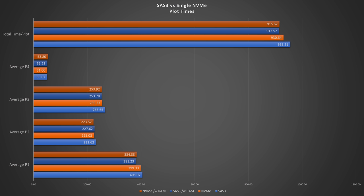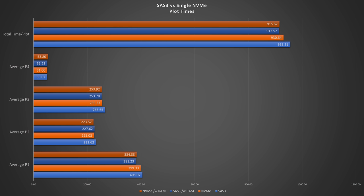The U8 V7 with a RAM disk at 915 seconds. Looking at these results, we actually notice that the SAS 3 is just a little bit faster than an NVMe when using RAM as T2. It is however 25 seconds slower when not using RAM as T2.